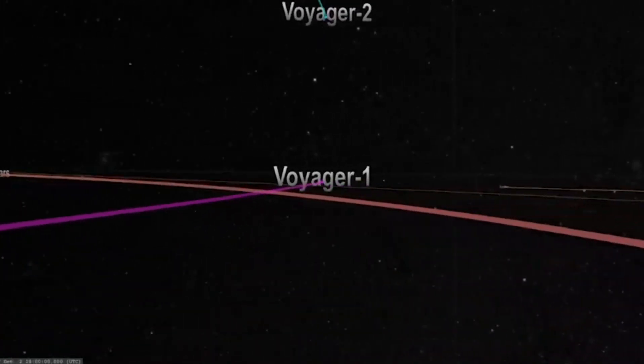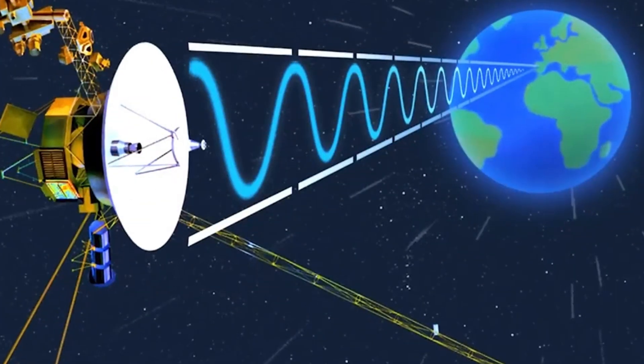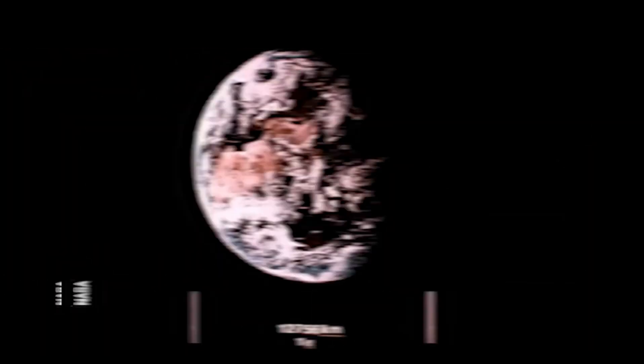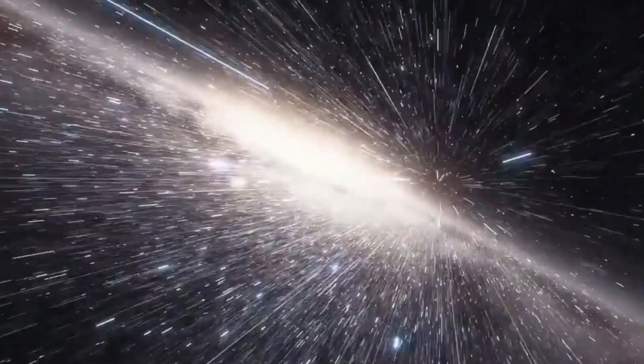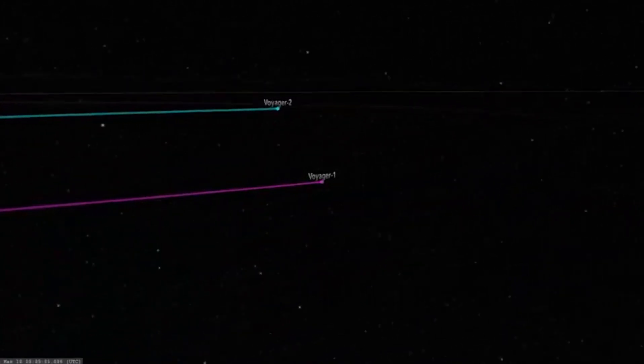But in 2012, Voyager 1 started to see the solar wind disappear and began seeing a significant increase in particle density around it, indicating that it was passing through that boundary into interstellar space. Voyager 2 noticed the same signs a few years later, officially crossing the heliopause in 2018. Both spacecraft were able to measure the boundary of the heliopause as being around 120 astronomical units, or 120 times further than the Earth is from the Sun.